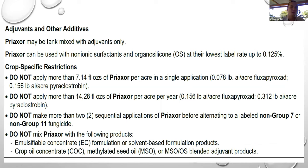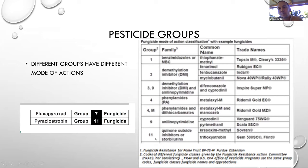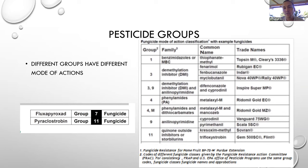There are a couple of other restrictions. You cannot make more than two sequential applications of Pryaxor before alternating to a non-Group 11 product. Different pesticides kill pests by different modes of action, so this restriction exists to prevent breeding pesticide-resistant pests. You'll see a group number on top of the pesticide label. Basically, you can't use Pryaxor more than twice without switching to another fungicide group first.